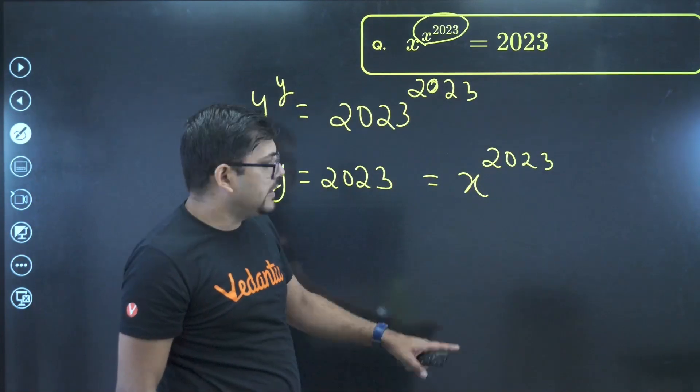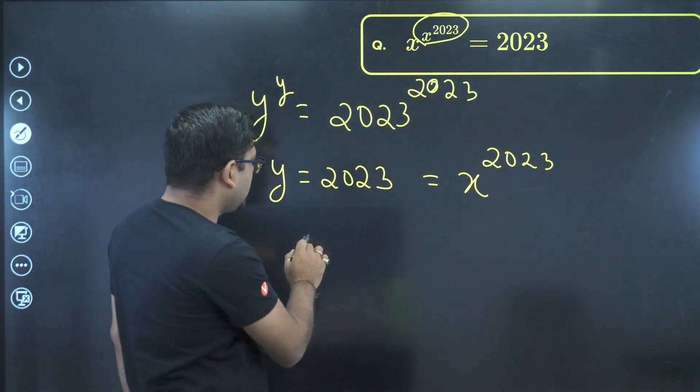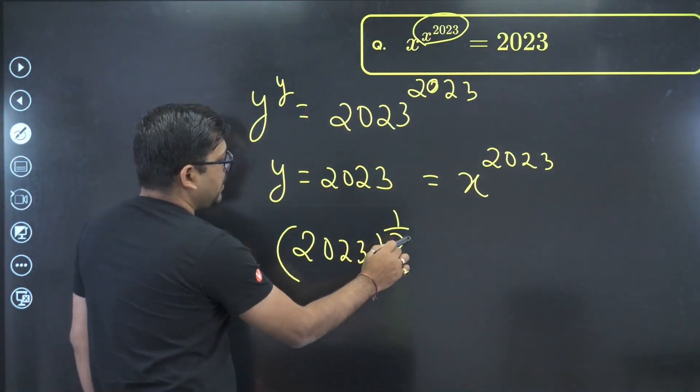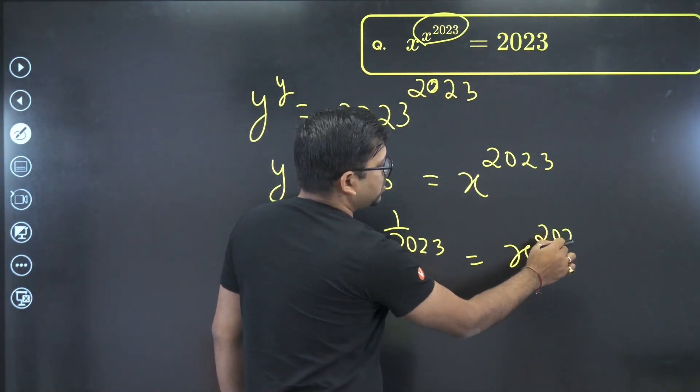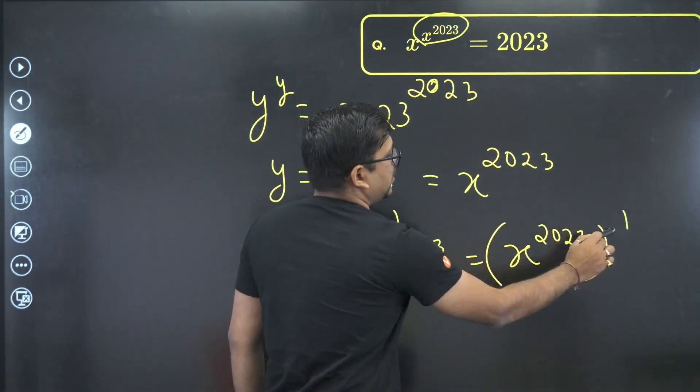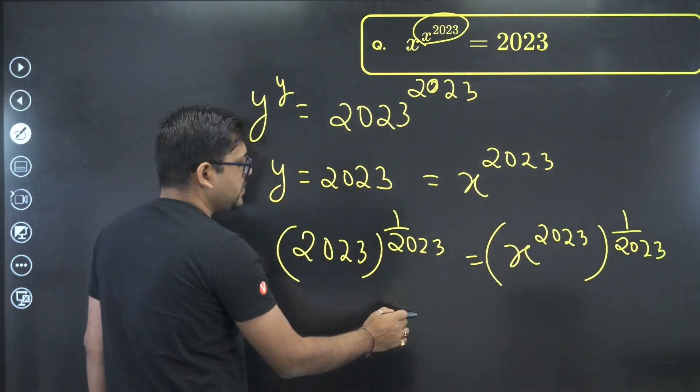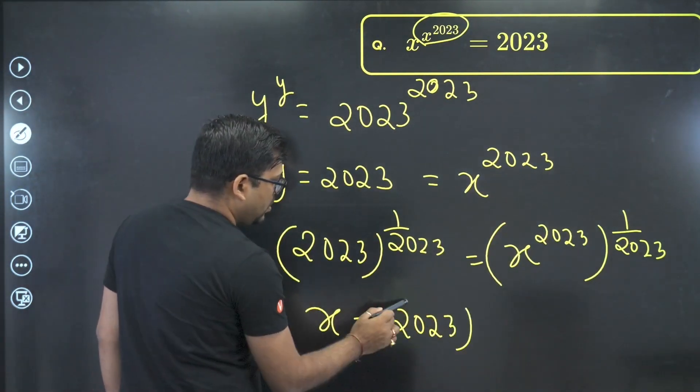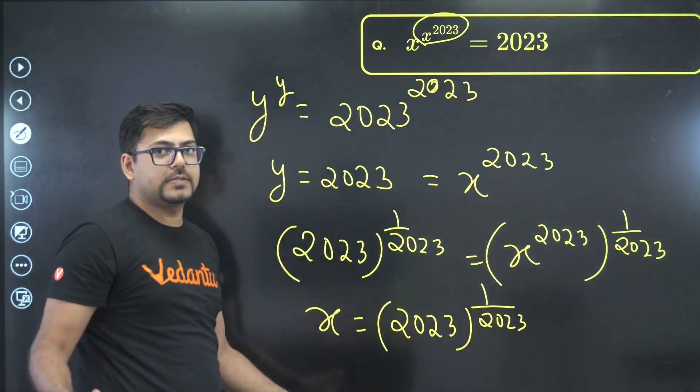So if we have to find x, I'll take power 1 upon 2023 both side. So I'll do 2023 whole to the power 1 upon 2023 equals x to the power 2023 whole to the power 1 upon 2023. Cool. Both the powers get cancelled. And hence we have got x equals 2023 whole to the power 1 by 2023. And hence that's the solution.